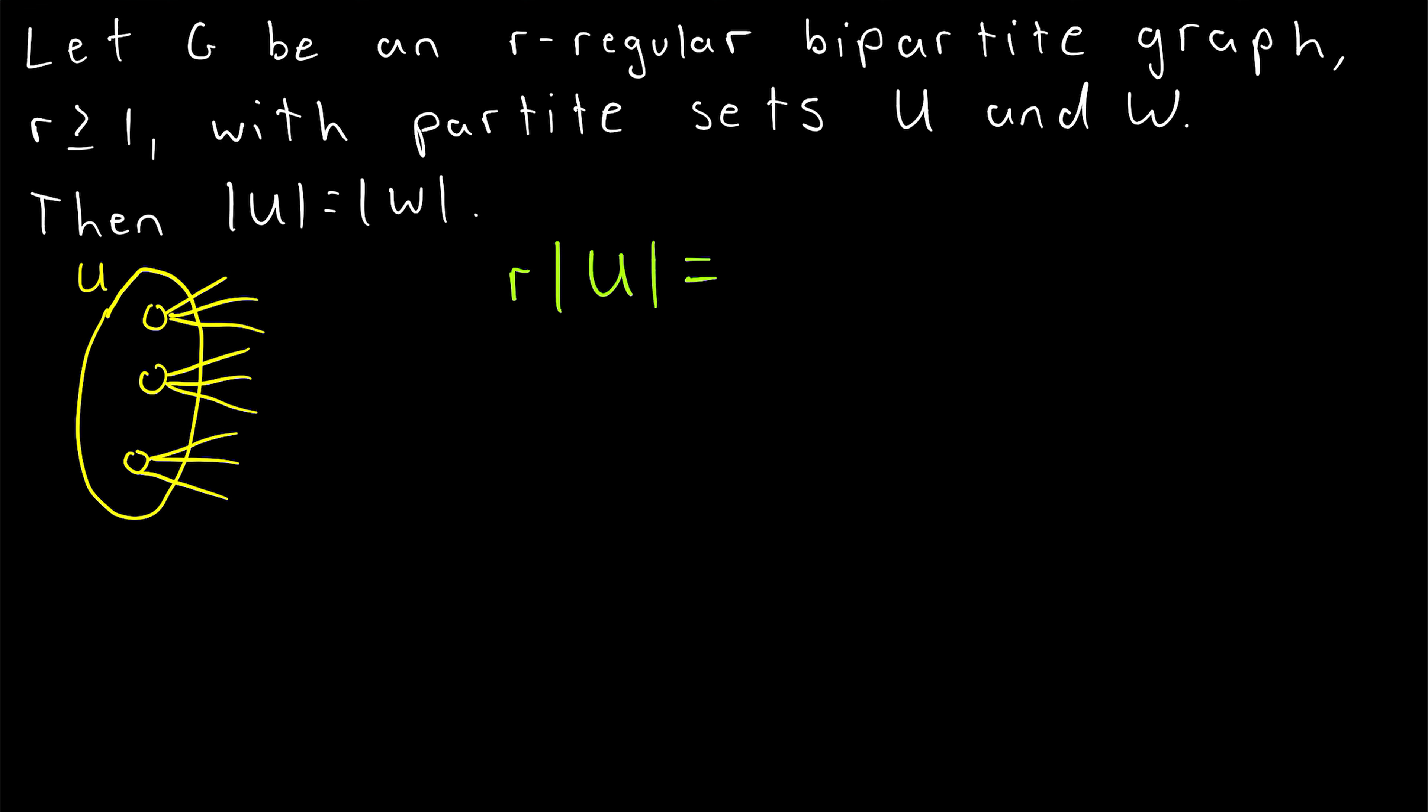By the same exact logic, we can count the number of edges in the graph using the cardinality of W. r times the number of vertices in W. Because of course, each edge of the graph is also incident to exactly one vertex in W. So we know we're not double counting any edges in this way, and we're not missing any edges.